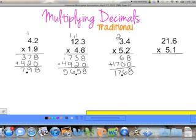Alright, last problem here. 1 times 6 is 6. 1 times 1 is 1. And 1 times 2 is 2. Done with our 1, 0 placeholder. 5 times 6 is 30. 5 times 1 is 5, plus 3 is 8. And 5 times 2 is 10.